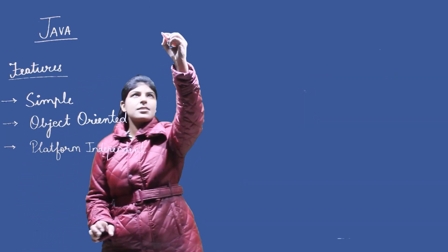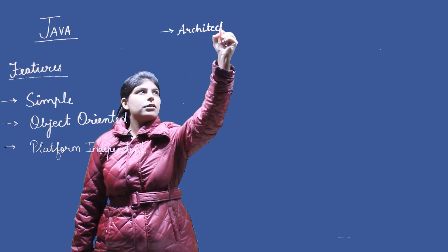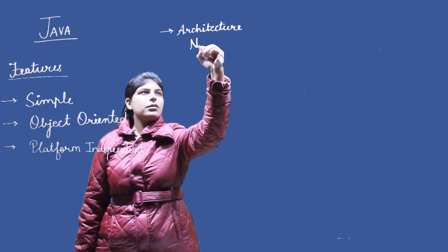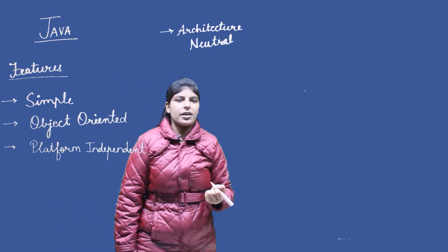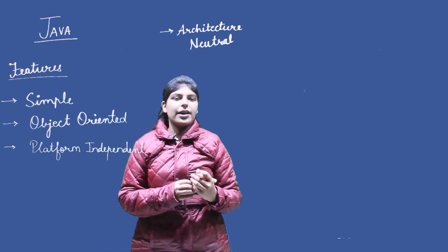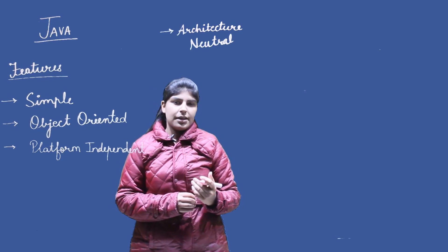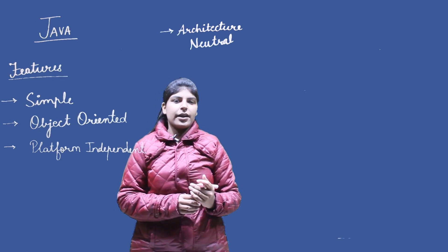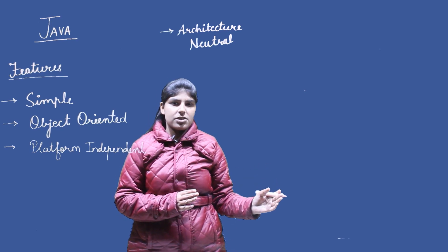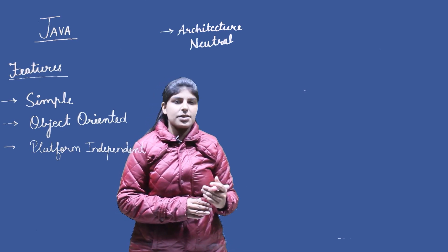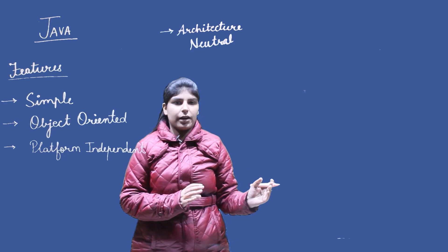The next feature is architecture neutral, meaning it is not dependent on the architecture. In C and C++, the size of data types differs on different architectures — for example, on a 32-bit architecture the size of int is 2 bytes, and on a 64-bit architecture it is 4 bytes. In Java, the size of data types is fixed regardless of architecture, so the size of int remains 4 bytes in both.